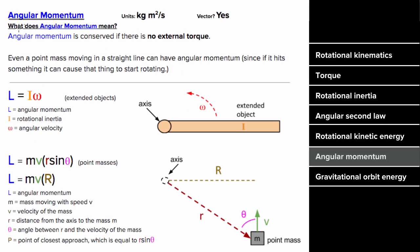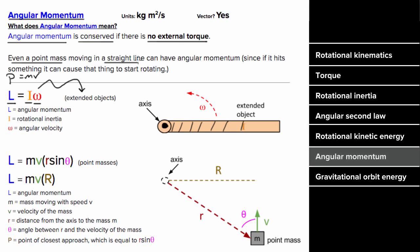What is angular momentum? Angular momentum is conserved for a system when there is no external torque. Just like regular momentum is mass times velocity, angular momentum of an extended object is L = Iω. Even a point mass moving in a straight line can have angular momentum: L = m·v·r·sin(θ), where θ is the angle between the velocity vector and r. Equivalently, multiply m times v by the distance of closest approach — how close that mass ever gets to the axis.